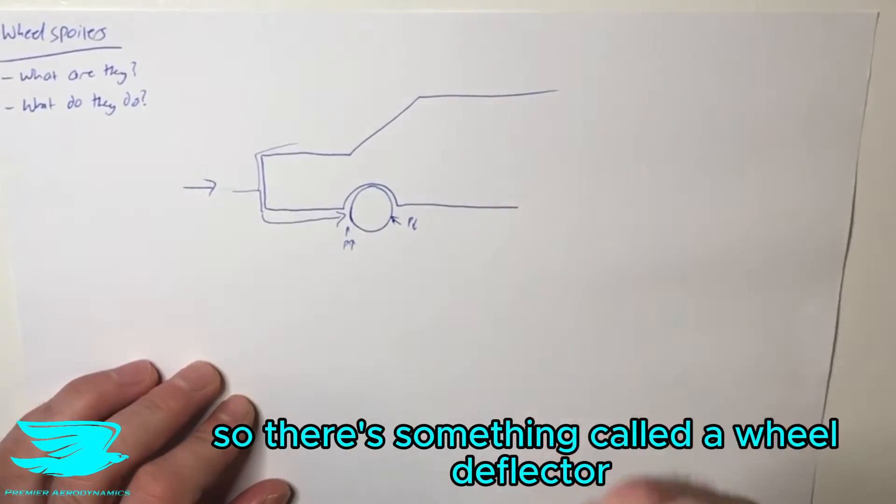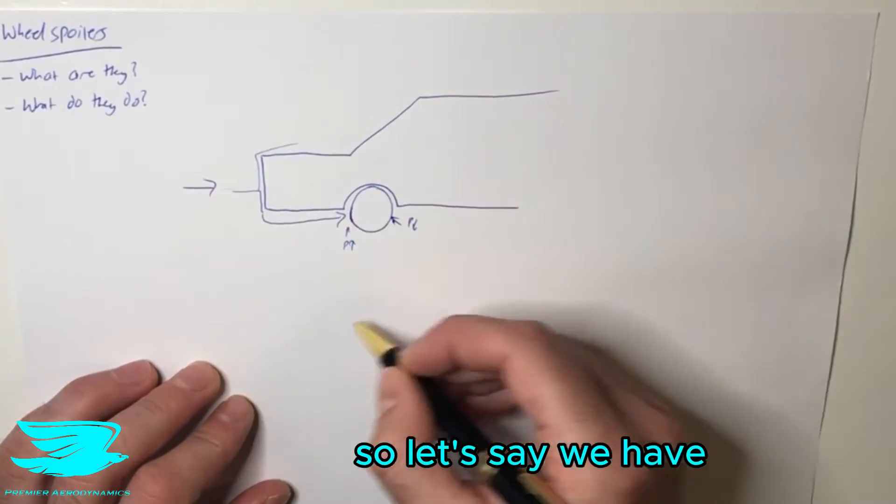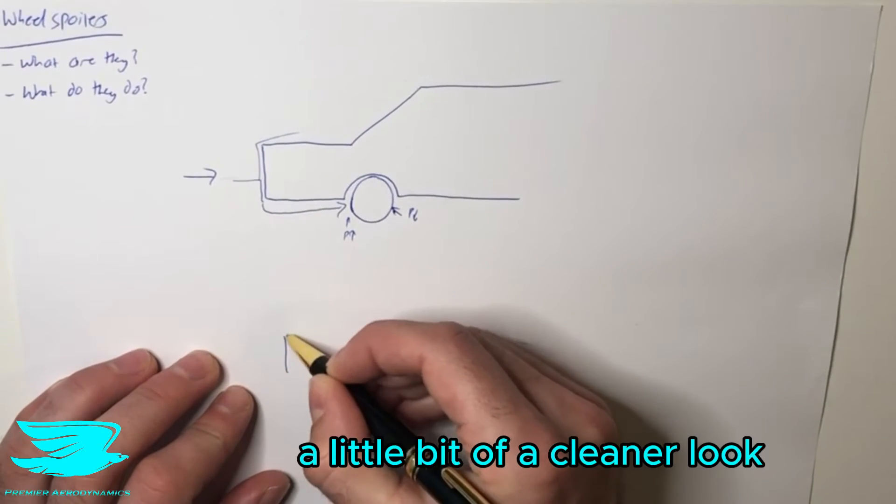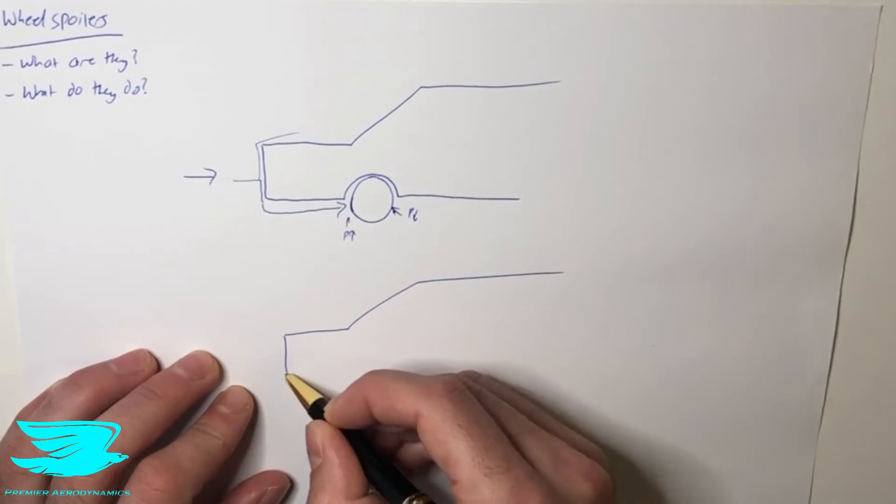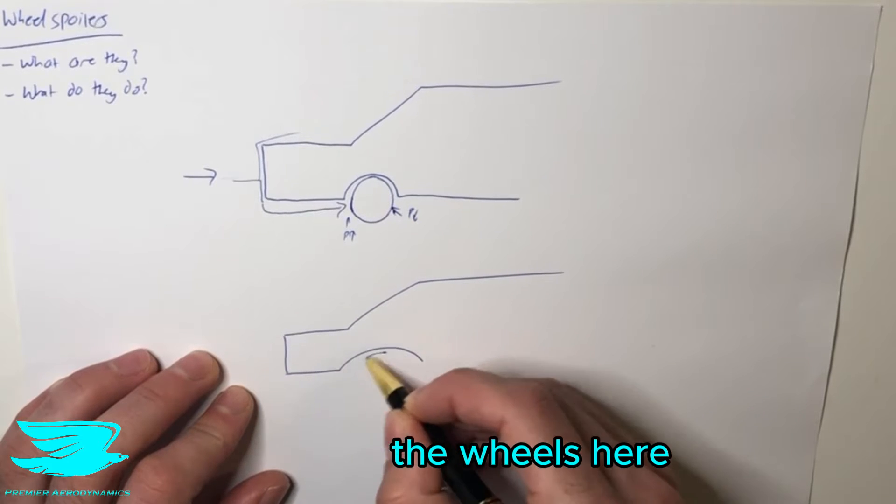So there's something called a wheel deflector. I'll draw it again to get a cleaner look. Let's say we have the wheels here again.